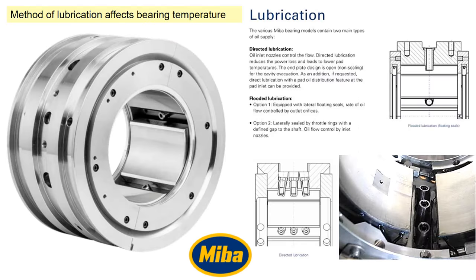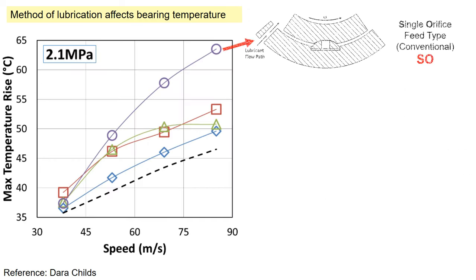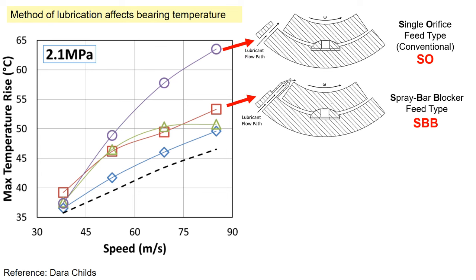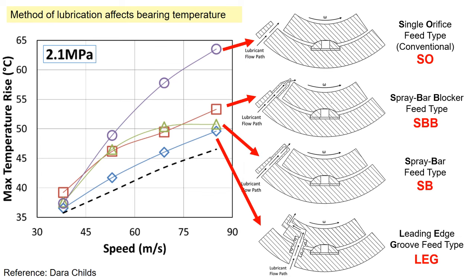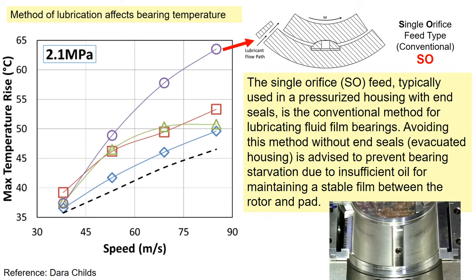Let's talk about the method of lubrication, which affects the bearing temperature. This plot shows the maximum temperature rise with the running speed. Different lubricant feed methods affect the bearing temperature increase. The single orifice feed, typically used in pressurized housing with end seals, is a conventional method for lubricating fluid film bearings. Avoiding this method without end seals is advised to prevent bearing starvation due to insufficient oil.